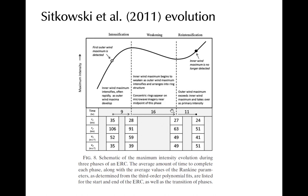Weakening may occur for about 16 hours before the cyclone begins to re-intensify. About 36 hours after the outer wind maximum first appeared, the inner eyewall has completely dissipated. Note that this timeframe of evolution is only an average and can vary significantly from storm to storm, and may depend on environmental characteristics outside the cyclone as well as dynamics internal to the storm.